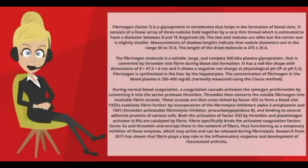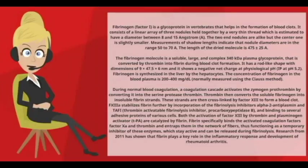The fibrinogen molecule is a soluble, large, and complex 340 kDa plasma glycoprotein that is converted by thrombin into fibrin during blood clot formation. It has a rod-like shape with dimensions of 9 × 47.5 × 6 nm and shows a negative net charge at physiological pH, with an isoelectric point at pH 5.2.